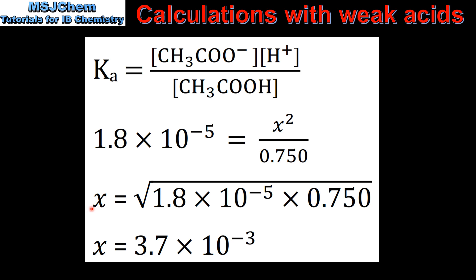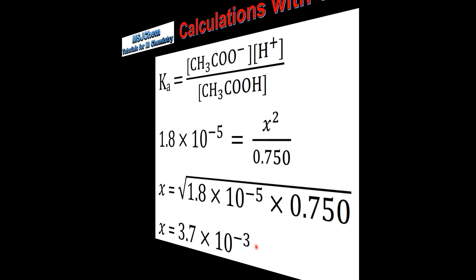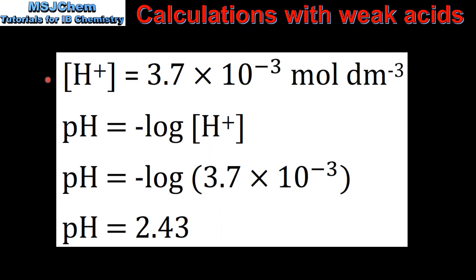Rearranging the equation, X equals the square root of 1.8 times 10 to the negative 5 multiplied by 0.750. This gives a value of X of 3.7 times 10 to the negative 3, which is the concentration of hydrogen ions. The pH equals negative log of the hydrogen ion concentration, giving a pH of 2.43.